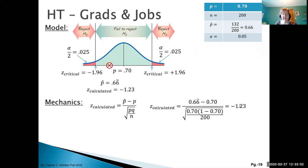We can locate that. So our Z calculated of negative 1.23 - we can clearly see it's in the fail to reject region. That's our critical value approach.